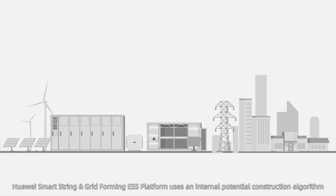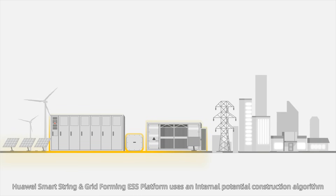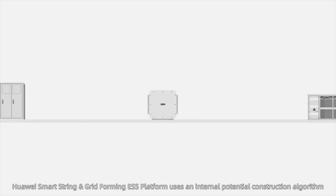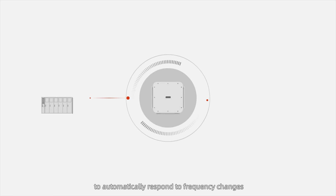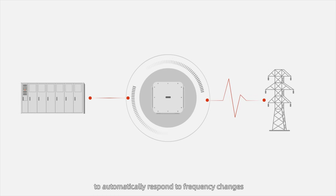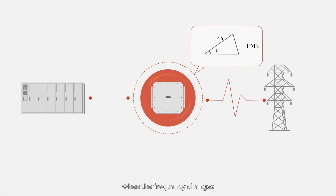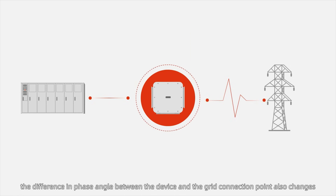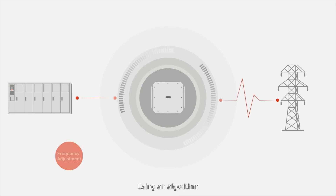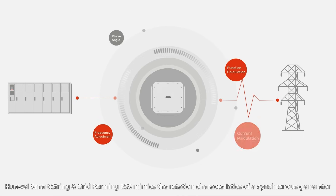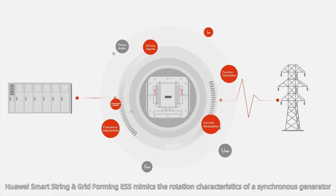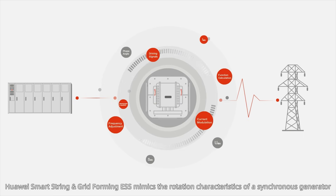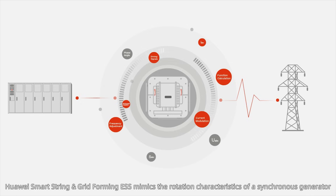Huawei SmartString GridForming ESS uses an internal potential construction algorithm to automatically respond to frequency changes. When the frequency changes, the difference in phase angle between the device and the grid connection point also changes. Using this algorithm, Huawei SmartString GridForming ESS mimics the rotational characteristics of a synchronous generator.